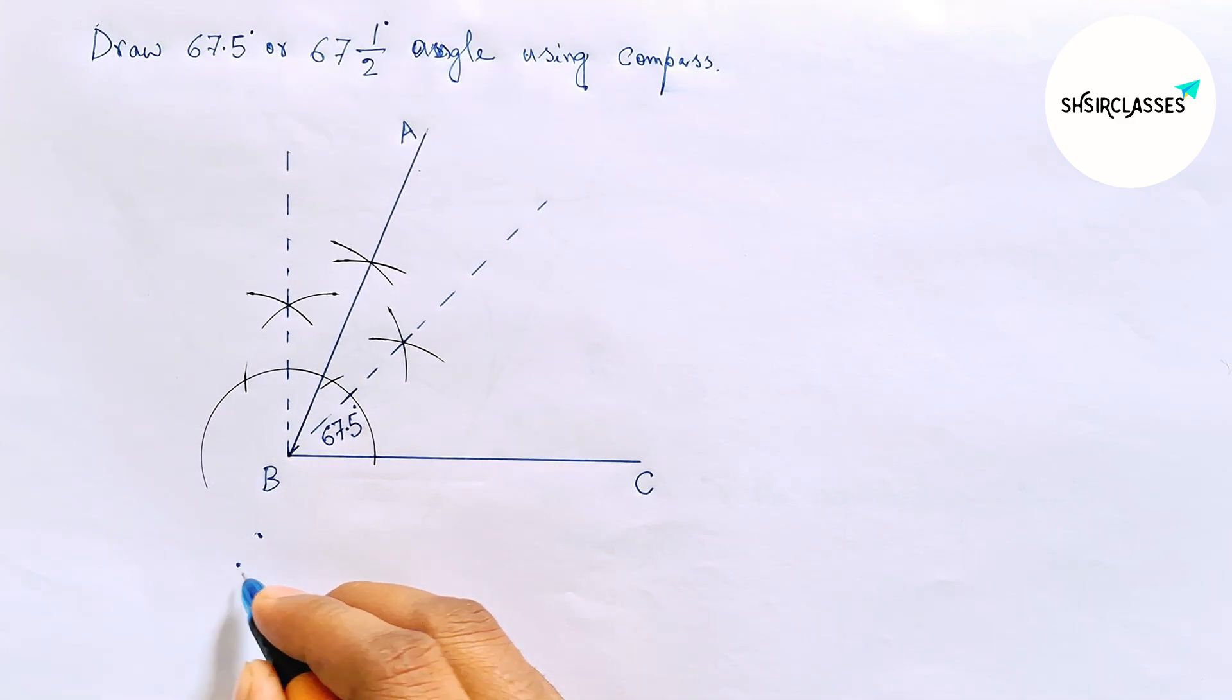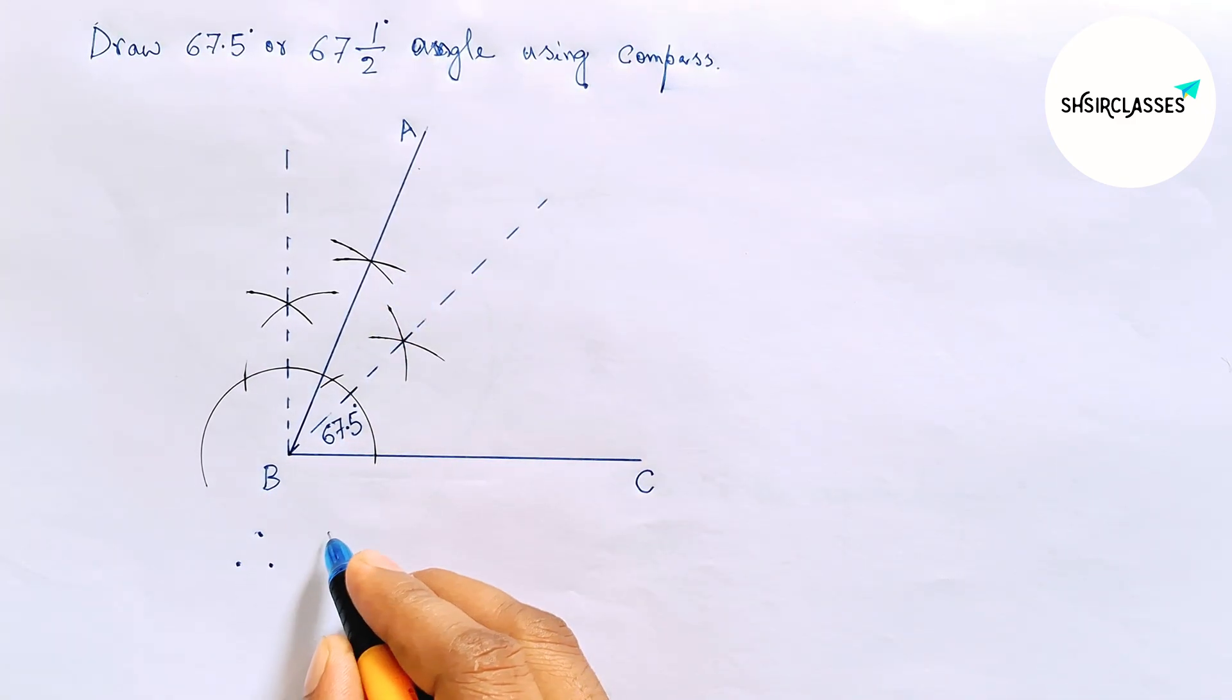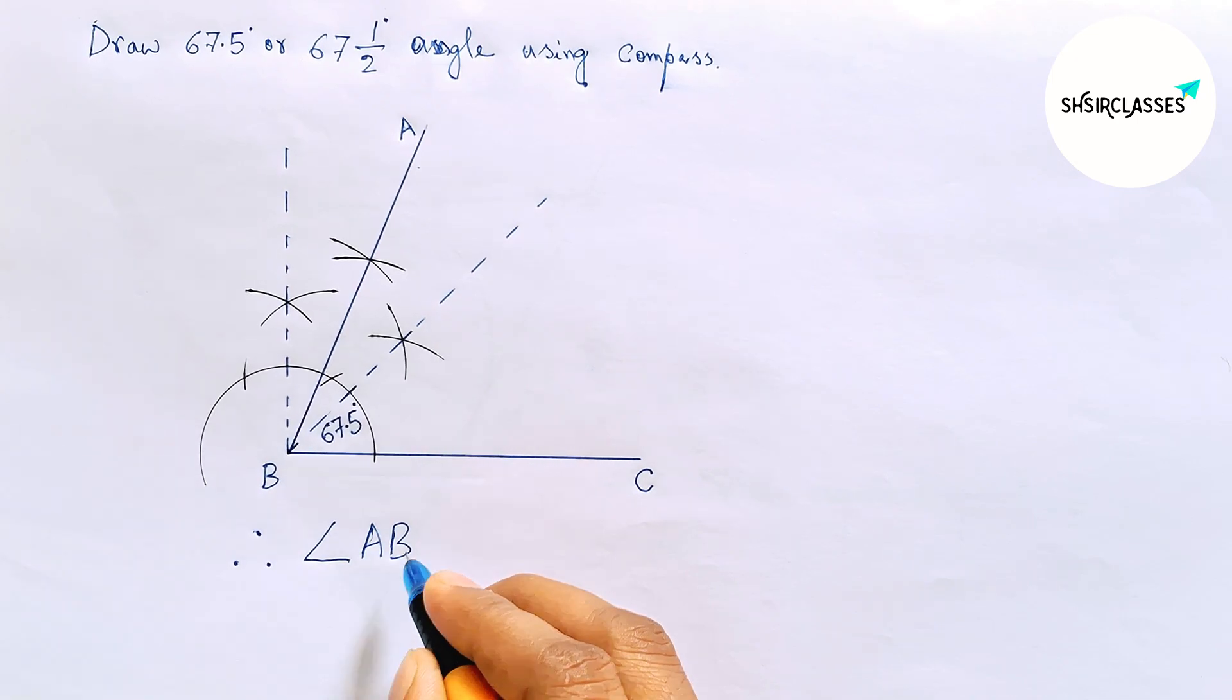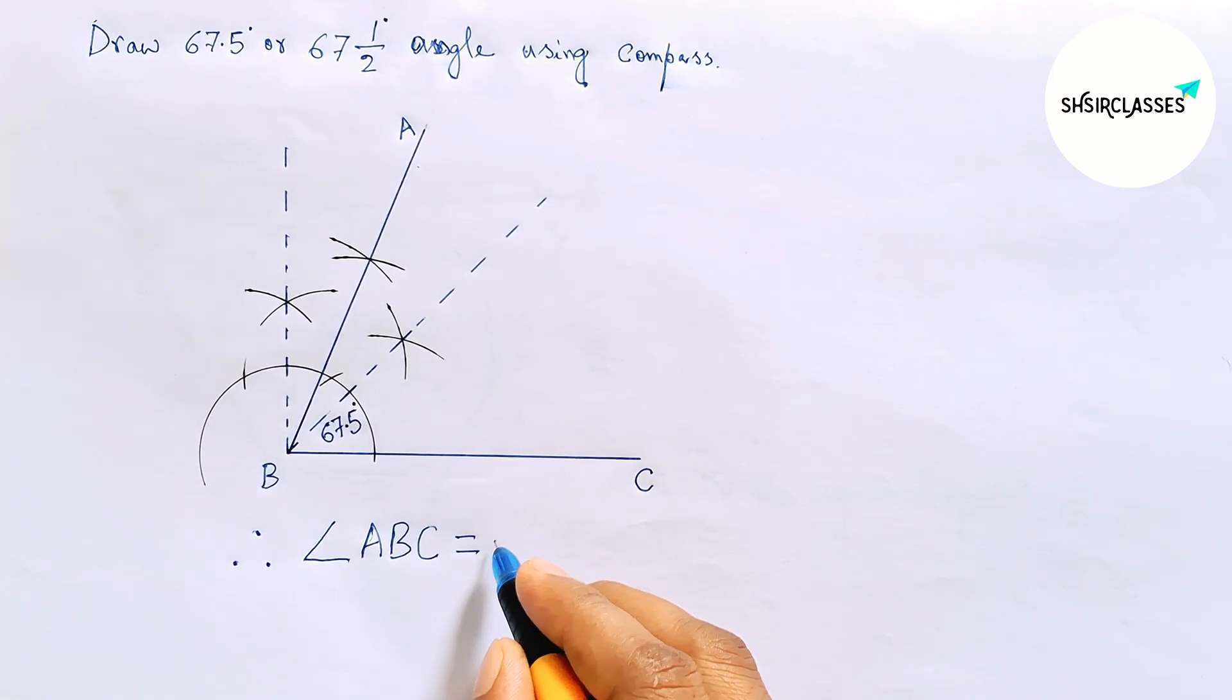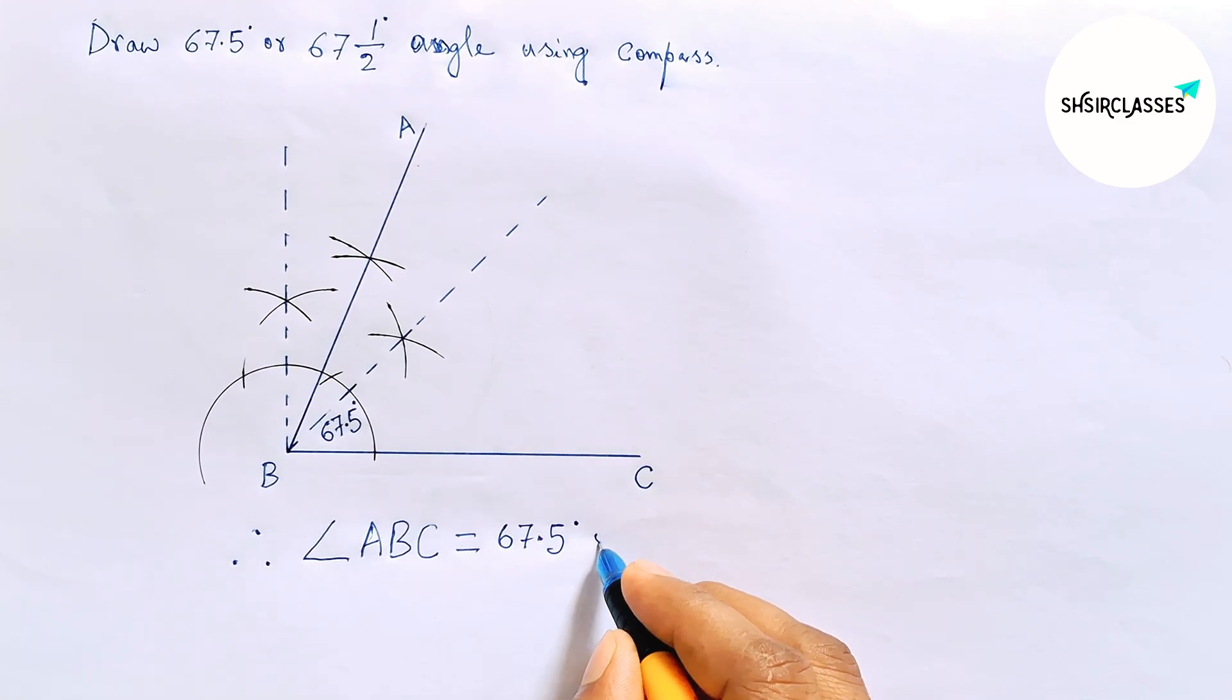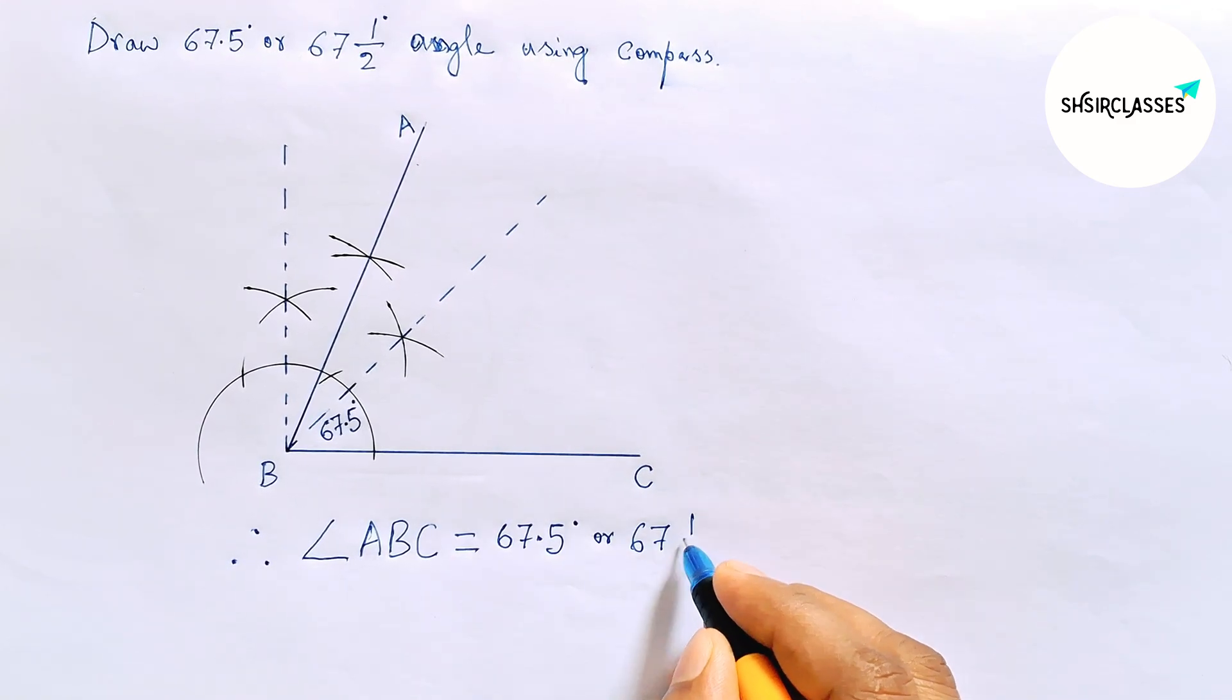So therefore angle ABC equals 67.5 degree or 67 and 1/2 degree angle. So by this way you can draw 67.5 degree angle using compass. So that's all. Thanks for watching.